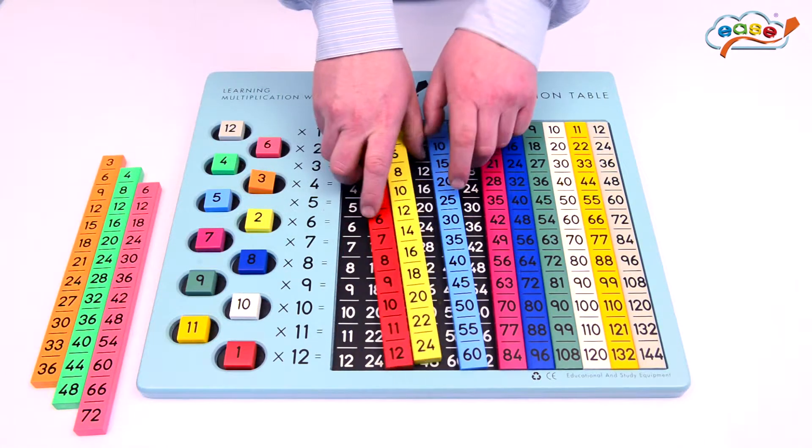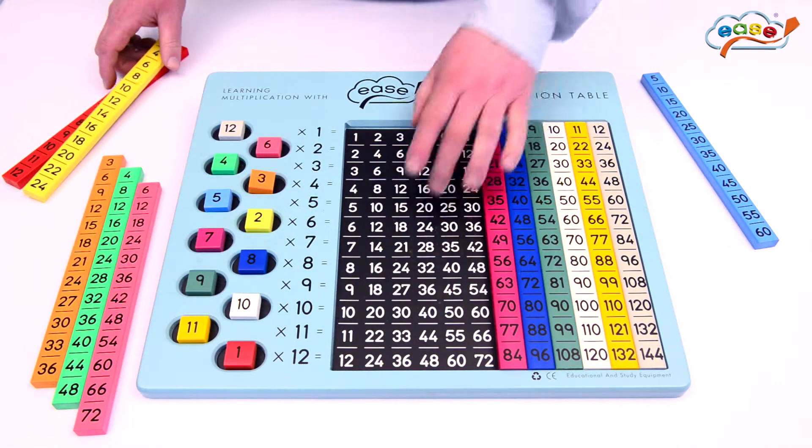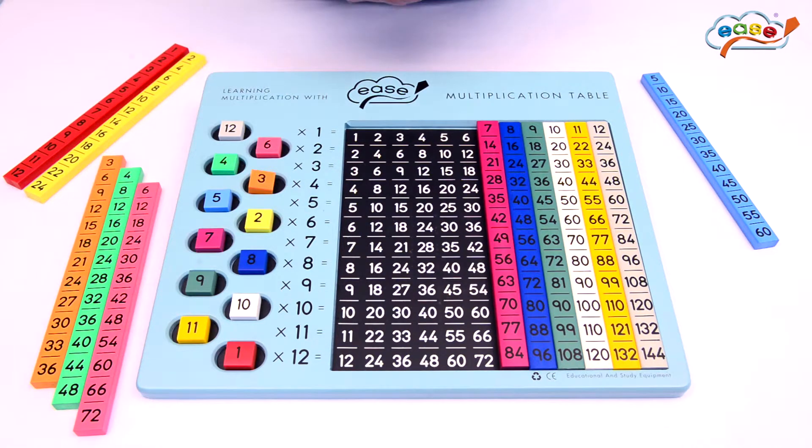Finally, then with the baseboard, we have the multiplication grid underneath. So now we have multiplication without the use of color.